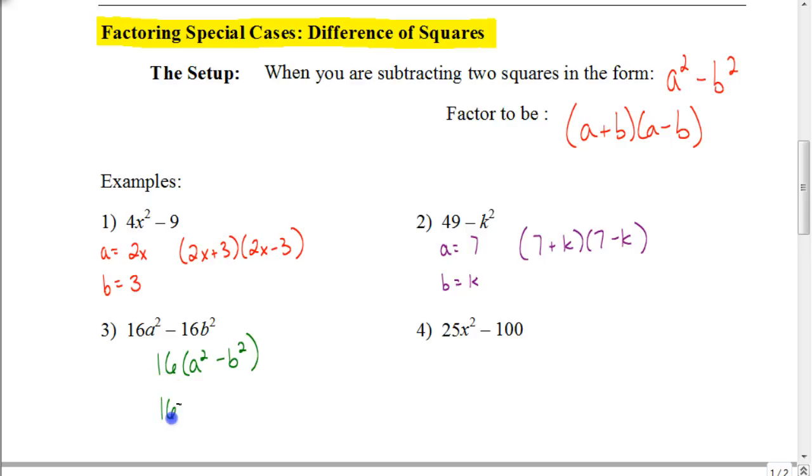So we know that's going to factor down to be (a + b)(a - b). Do not forget to carry down our GCF. That is a common mistake that people make, because they forget to include the greatest common factor that they factored out at the beginning with their final answer. So you'd have 16(a + b)(a - b).